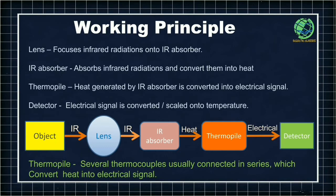First, there is the object — something whose temperature is to be measured. The object is at a certain temperature above absolute zero, so it is emitting infrared radiation. That infrared radiation travels first to the lens. The role of the lens is to focus that infrared radiation onto an infrared absorber. The infrared absorber then converts that focused infrared radiation into heat.